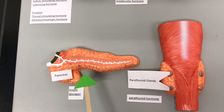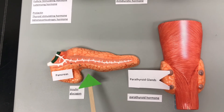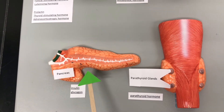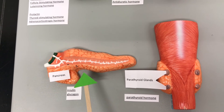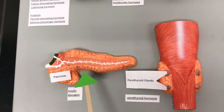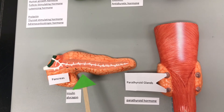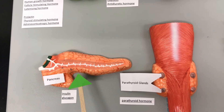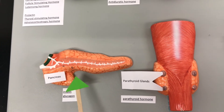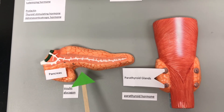The acinar cells that are in the pancreas are the exocrine gland part, and they release digestive enzymes and buffers for the digestive system.